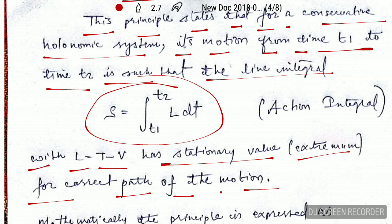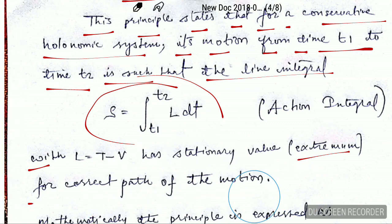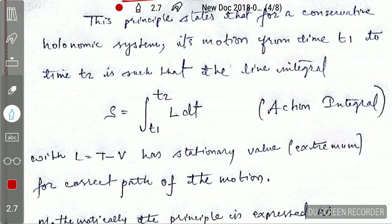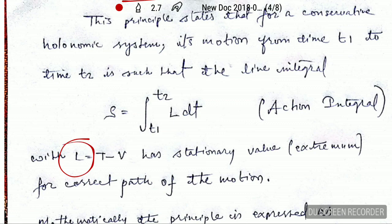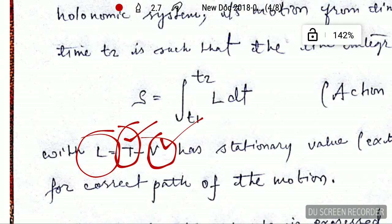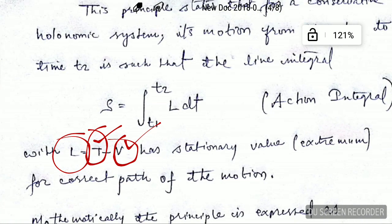Let me explain. First, L here is the Lagrangian, and it equals kinetic energy minus potential energy. So the Lagrangian L = T − V, where T stands for kinetic energy and V stands for potential energy.